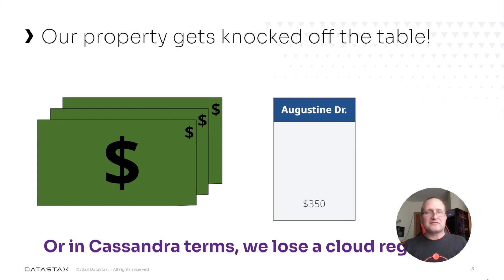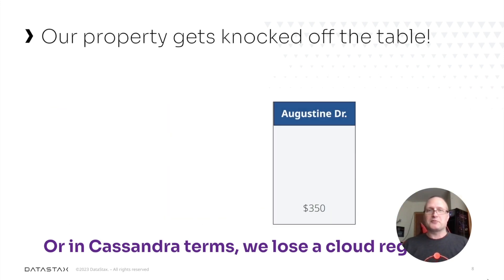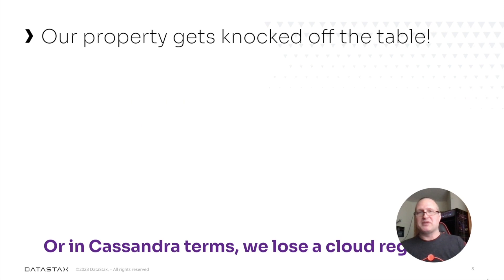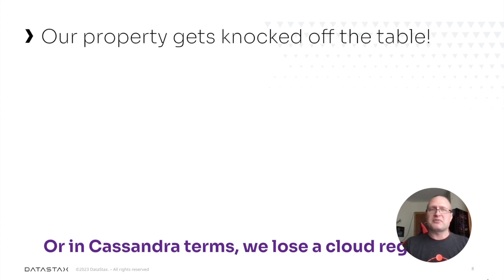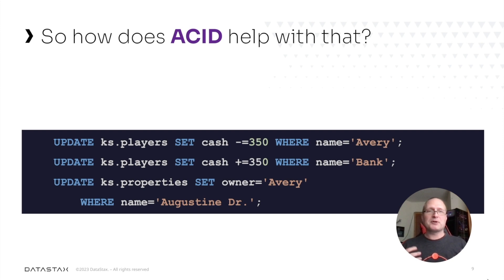But what happens if, during that exchange, maybe our property gets lost somewhere along the way? We hand the money over, but maybe the property gets knocked off the table. Or in Cassandra terms, maybe we lose a cloud region or we lose enough nodes that we can no longer get quorum. So there are some things that need to be looked at here. How would ACID help with that?